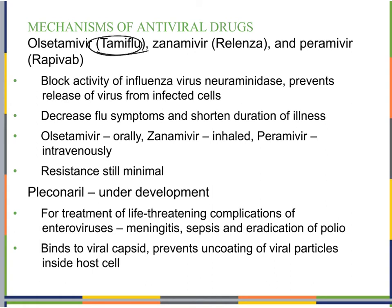Oseltamivir (Tamiflu), zanamivir (Relenza), and peramivir block the activity of the influenza virus neuraminidase, preventing the release of the virus from infected cells. Rather than blocking virus entry, the virus still gets into the cell and replicates, but these drugs block its ability to get out and infect other cells. This decreases flu symptoms and shortens illness — the immune system can clear the viruses that can't escape. They can be taken orally, inhaled, or intravenously, and resistance is still relatively minimal.